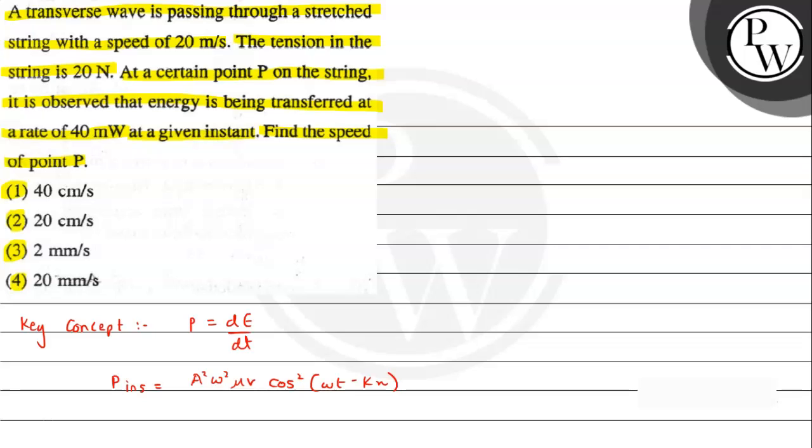If we carefully analyze this expression, we can write that average power is the power in one complete cycle that the wave is carrying. It comes out to be half, which can be written as A squared omega squared mu times v. We will remember these two results and use them.